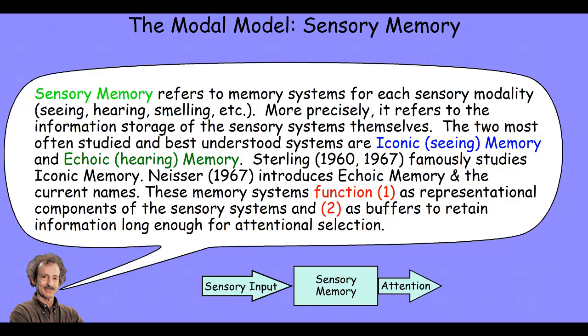The two most often studied and best understood systems are iconic, or seeing memory, and echoic, or hearing memory. Sperling, in papers in 1960 and 1967, famously studied iconic memory. Neisser, in 1967, introduced echoic memory and the current names. These memory systems function as representational components of sensory systems, and as buffers to retain information long enough for attentional selection.